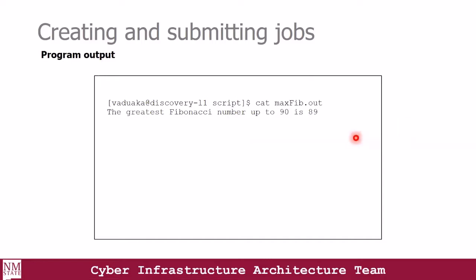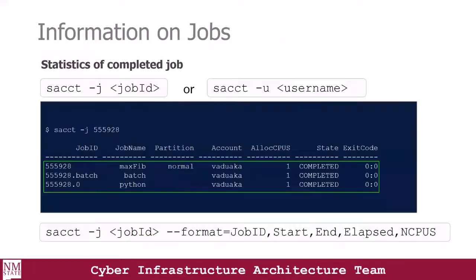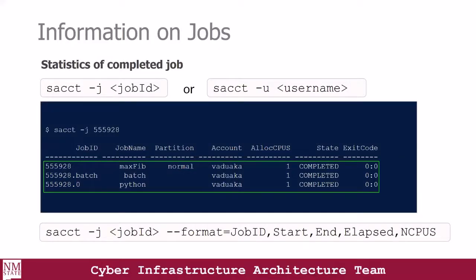Our job was successfully submitted and ran successfully. To view the result, we use the Linux cat command to show the output of the job, which is in the maxfib.out file. We can view information on jobs by getting the statistics or accounting data on completed jobs by passing either the job ID or username flags. Here, we used the job ID to show statistics about a completed job.